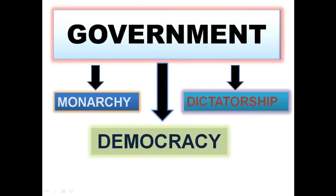Moving on, government has different types. The first one is monarchy, the second is dictatorship, and the third is democracy. Monarchy is a form of government headed by a king or a queen, meaning the country is controlled by a king or queen. It is hereditary, meaning power passes down from one generation to another. A famous example of a monarch is Akbar, one of the greatest monarchs in history. In a monarchy, a monarch is assisted by a council of ministers.